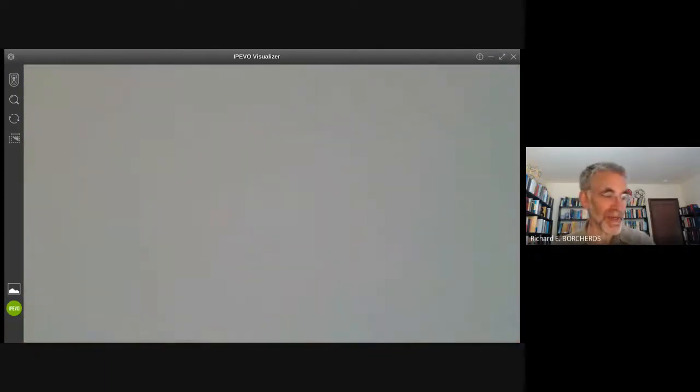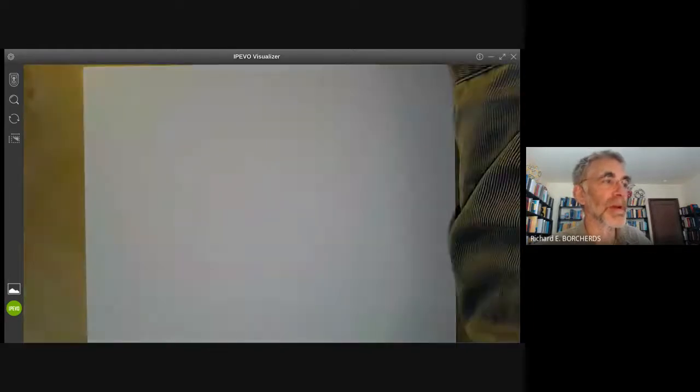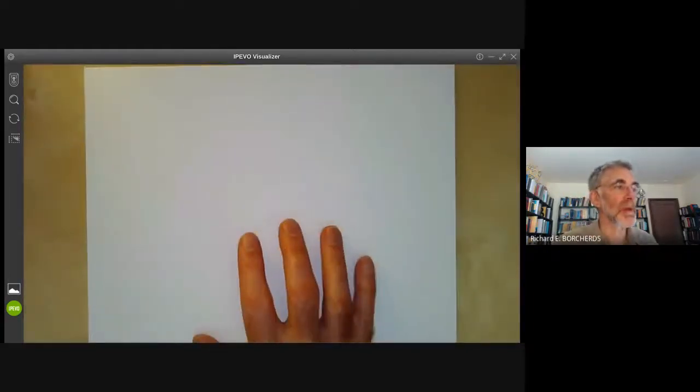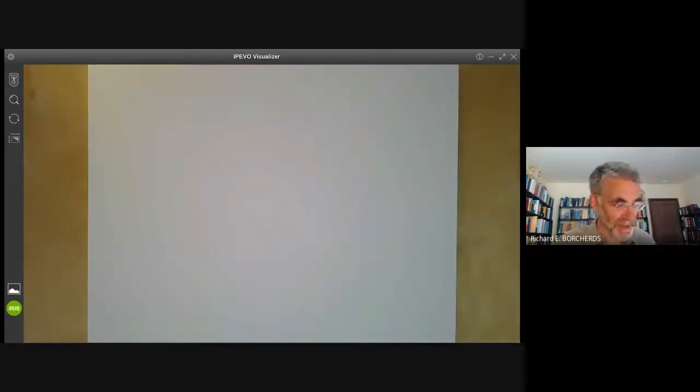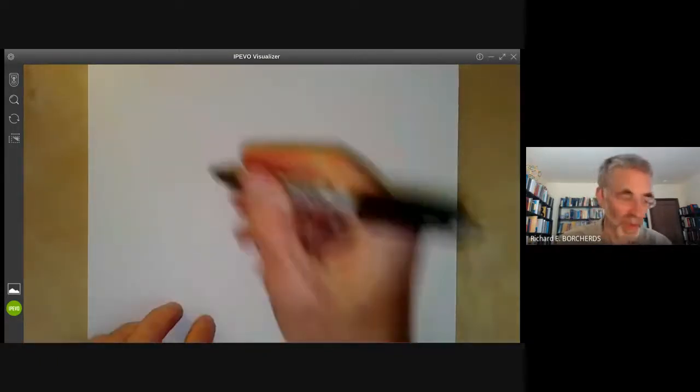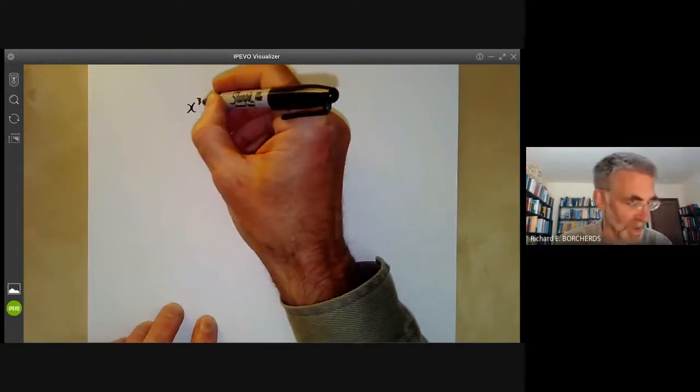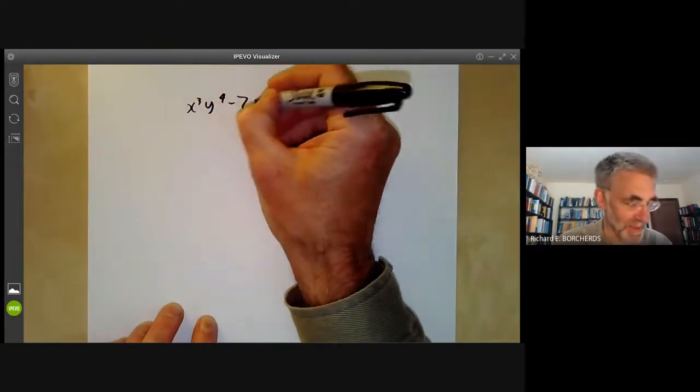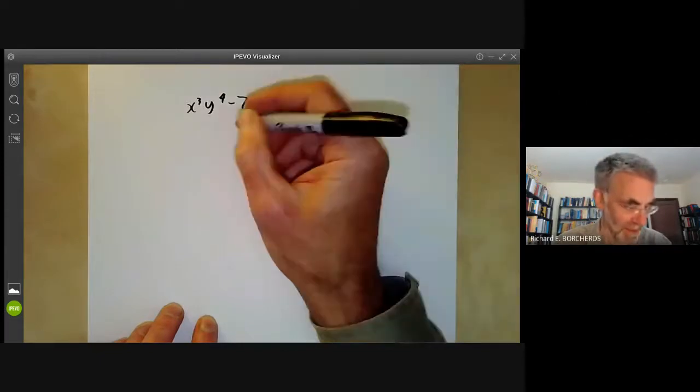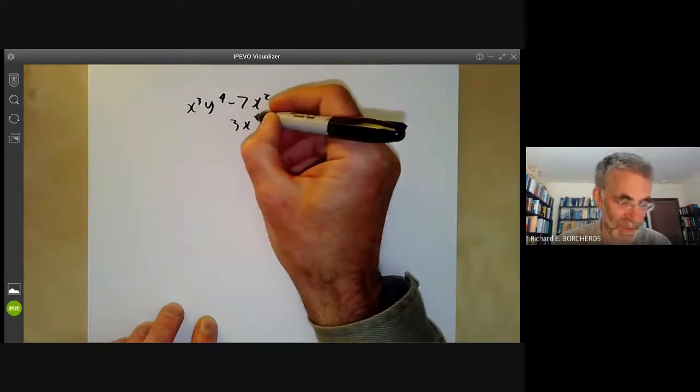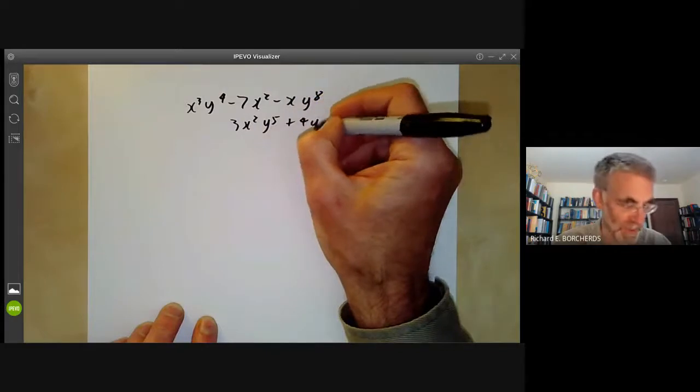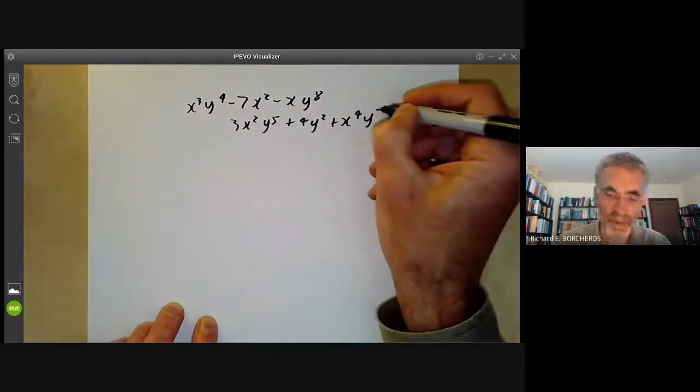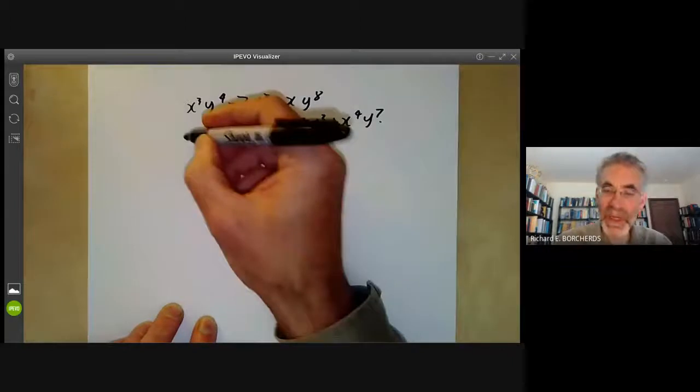Anyway, what is this elimination theory that people get so excited about? Here's an example. Suppose you've got two polynomials such as x cubed y to the 4 minus 7x squared minus xy to the 8 and 3x squared y to the 5 plus 4y squared plus x to the 7. And what we want to do is eliminate y.